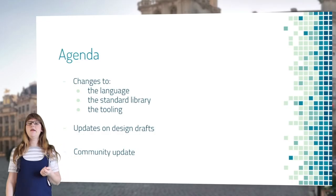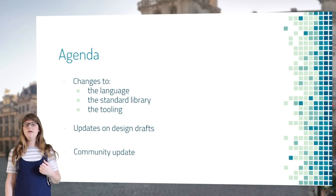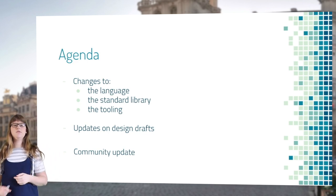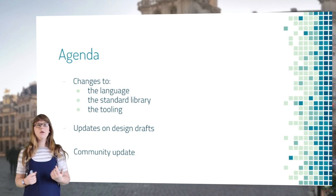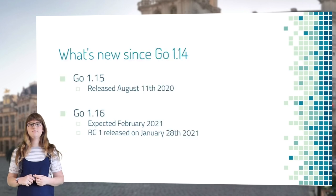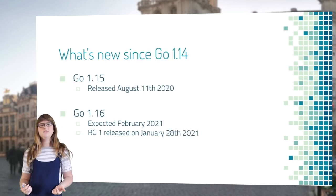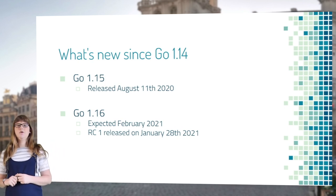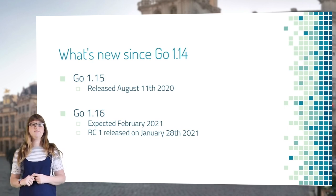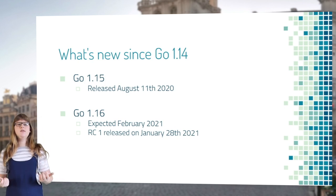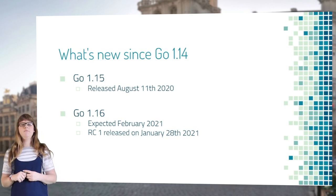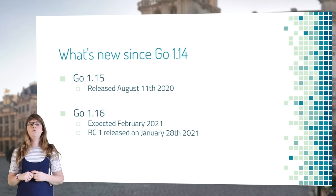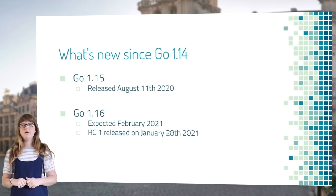Today I'm going to talk about changes to the language, changes to the standard library, and changes to the tooling. As well as give you an update on some design drafts for new versions of Go and an update on the Go community. So, what's new since Go 1.15? Go 1.15 was released on August 11, 2020, and Go 1.16 is expected to release this month, February 2021, which we currently already have a release candidate out for.